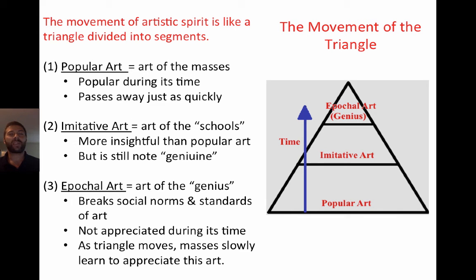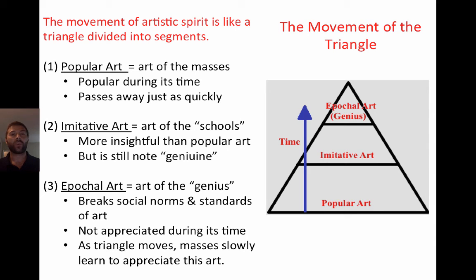Another point that Kandinsky talks about is how our time moves historically and how we become more turned toward a specific kind of art — how art appeals to us within a certain age. He makes three distinctions: popular art, imitative art, and epical art. Popular art is the art of the masses — art or music which suddenly everybody likes, and just as suddenly no one likes it or everyone has forgotten it. It's popular during its time and passes away quickly. While it could be the art of its age, because it lacks lasting force and power, it really lacks the capacity to become art in a more fundamental way.